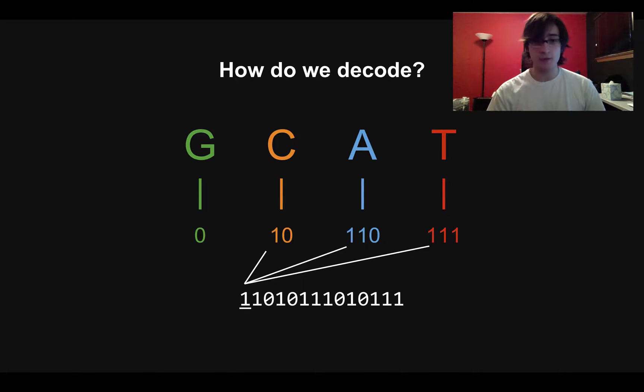Now we look at the next bit, which is a one. And so we know it can't be a C because C starts with a one zero. So because we see one one right here, we know that it has to be one of the two things that starts with one one. And finally, looking at the third bit, it has to be an A because A is the only thing that reads one one zero.